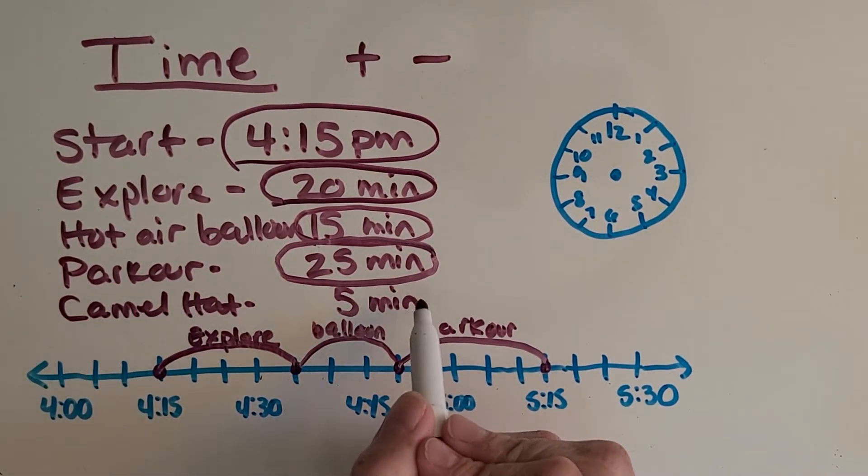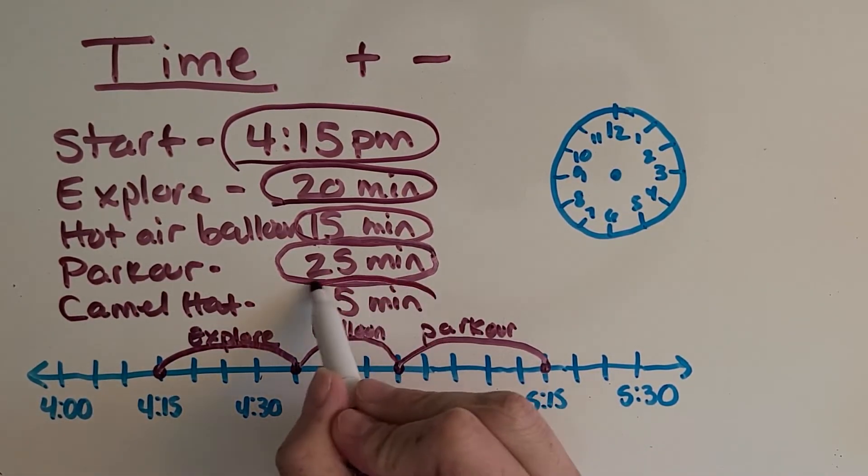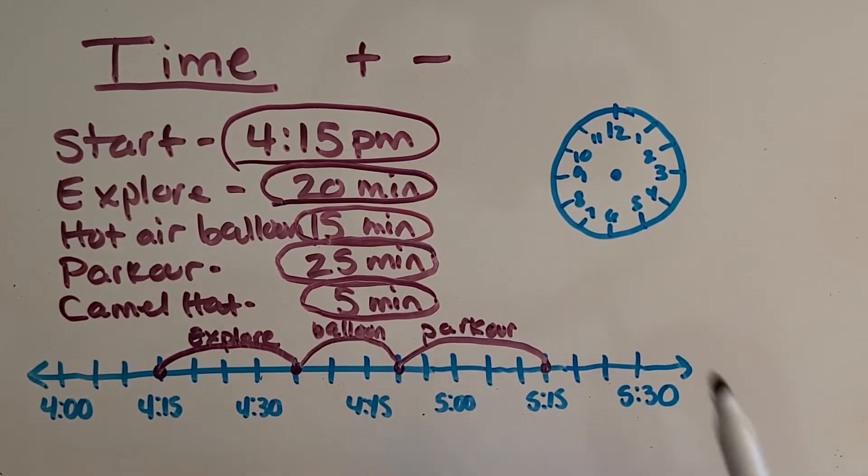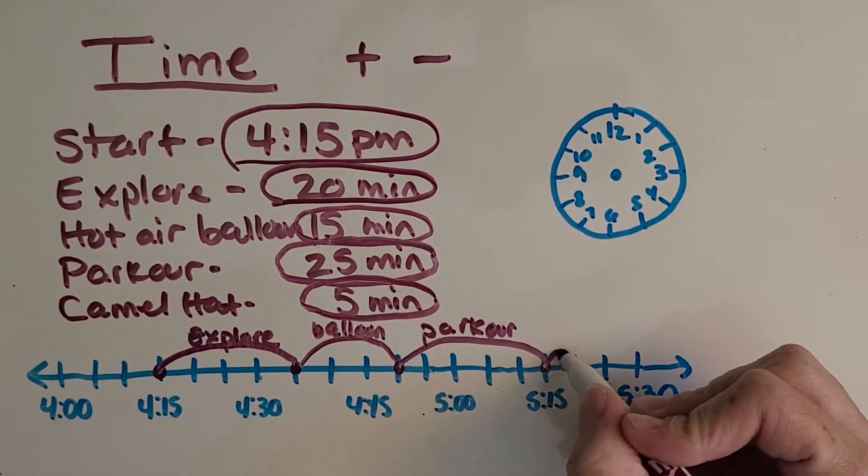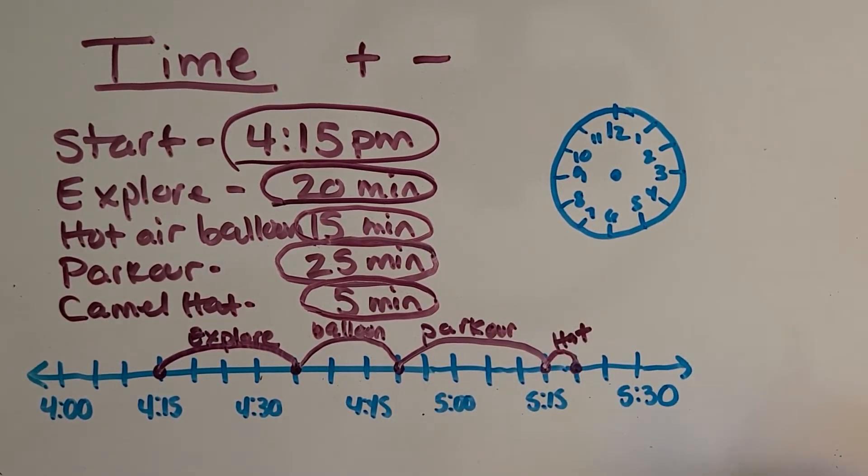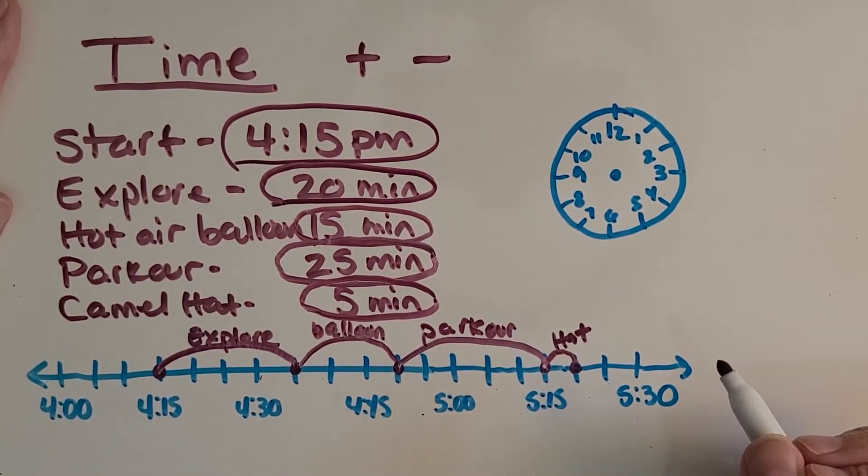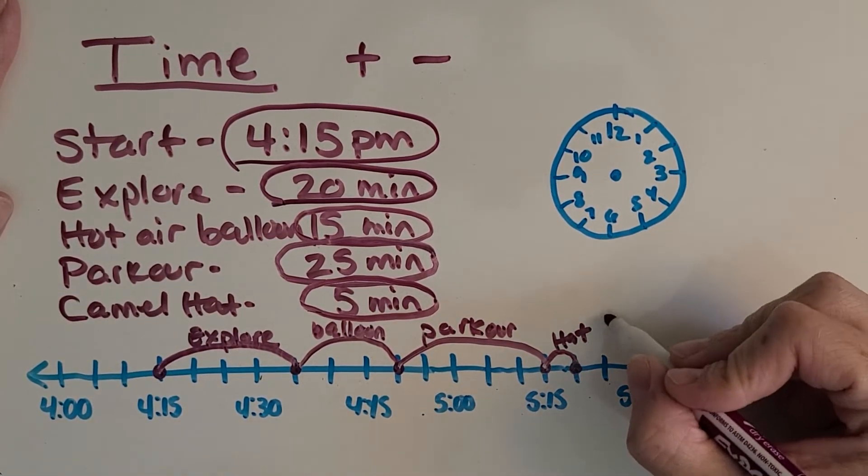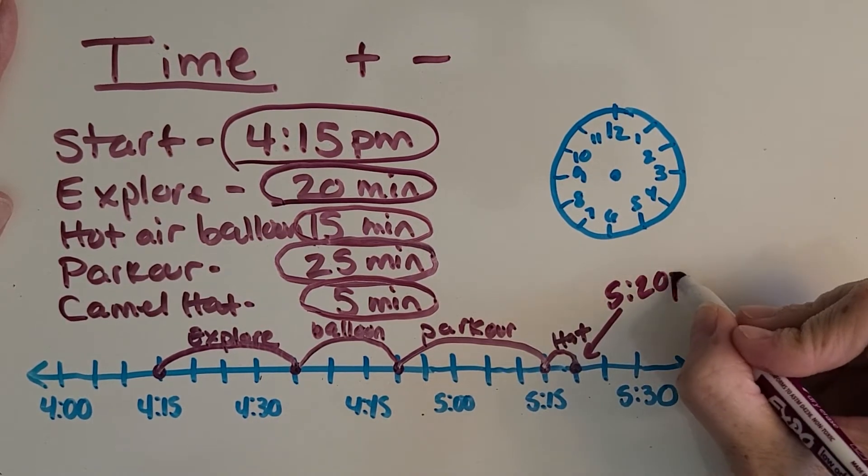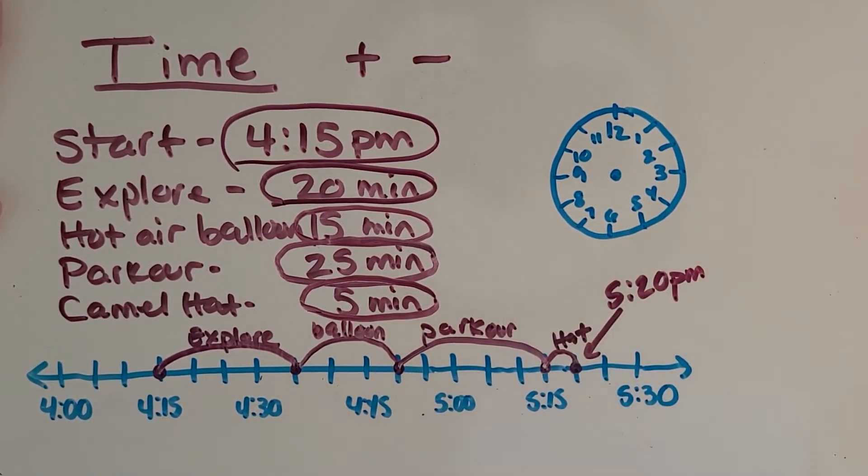Now we've got one more thing. I did the camel hat for five minutes. Can you pause the video? Find out where it's at and that'll be our ending time. All right, this one was a short little jump. Just five minutes for the hat. And what is my ending time? What time did I stop playing? You got it. 5:20 p.m. Awesome.